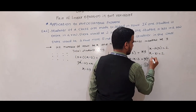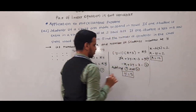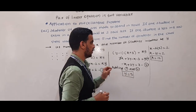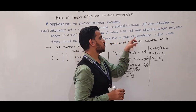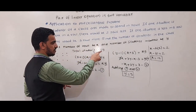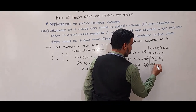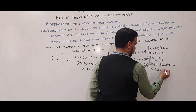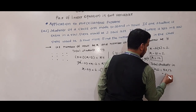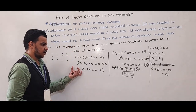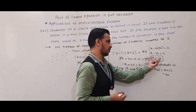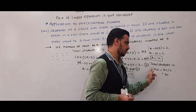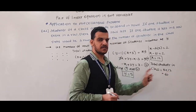Adding equations 1 and 2: X cancels out. 3Y - 2Y = Y, and 3 + 2 = 5, so Y = 5. Substituting Y = 5 into equation 1: X - 2(5) = 2, so X - 10 = 2, giving X = 12. Number of rows is 12 and number of students per row is 5. Therefore, total students in class = X × Y = 12 × 5 = 60.